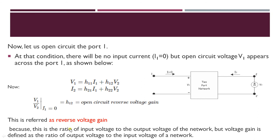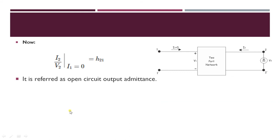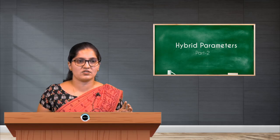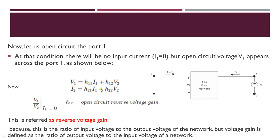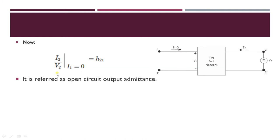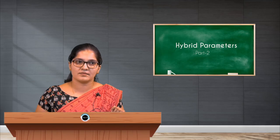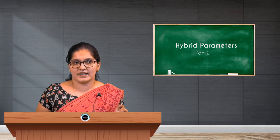This is called reverse voltage gain because it is the reverse of V2 by V1. V2 by V1 is a gain, and V1 by V2 is the reverse voltage gain. In the second equation, when I1 is 0, we get H22 equal to I2 divided by V2. I2 by V2 is called output admittance, which is the reciprocal of impedance.